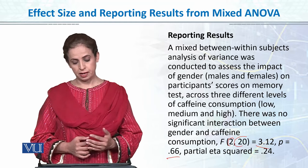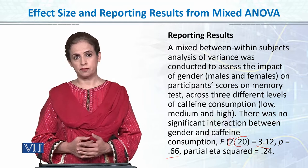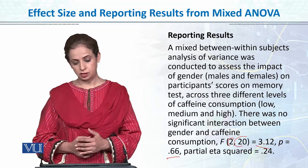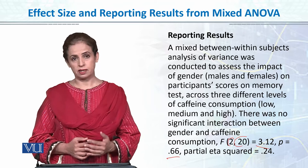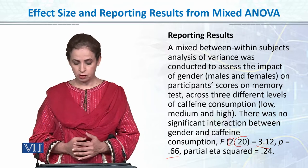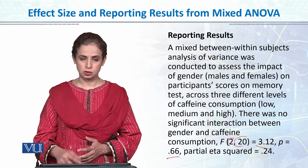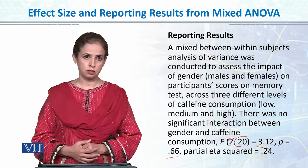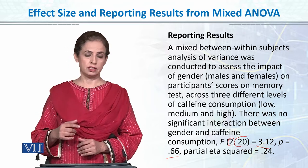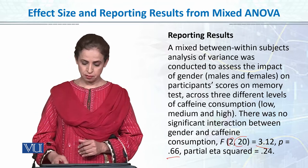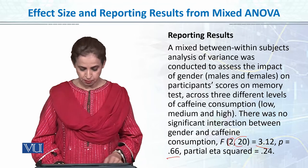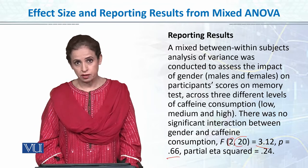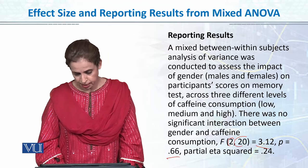In the next line: there was no significant interaction effect between gender and caffeine, then we report the F value with degrees of freedom, then the p-value, and then the partial eta square value.